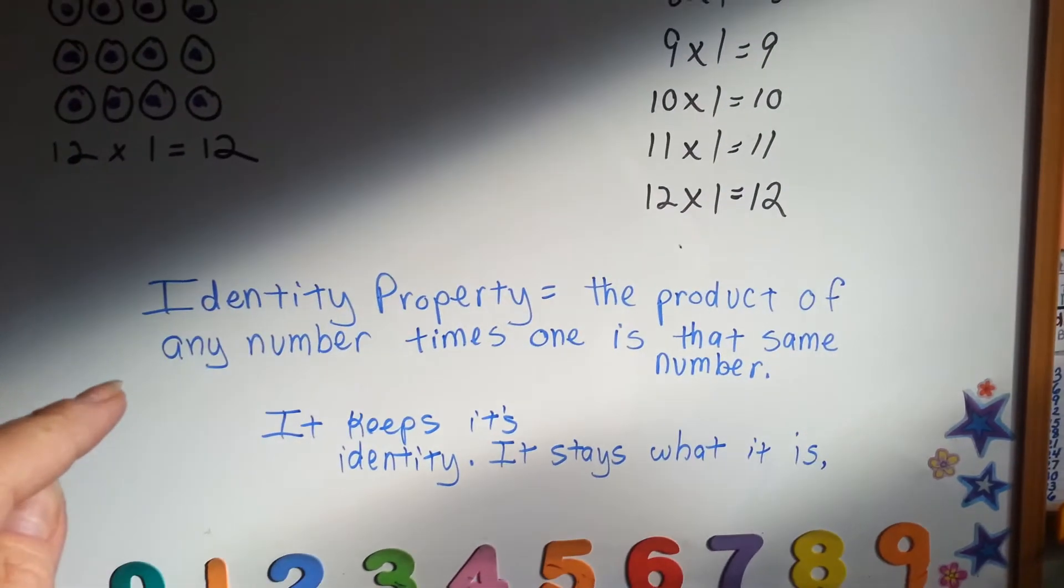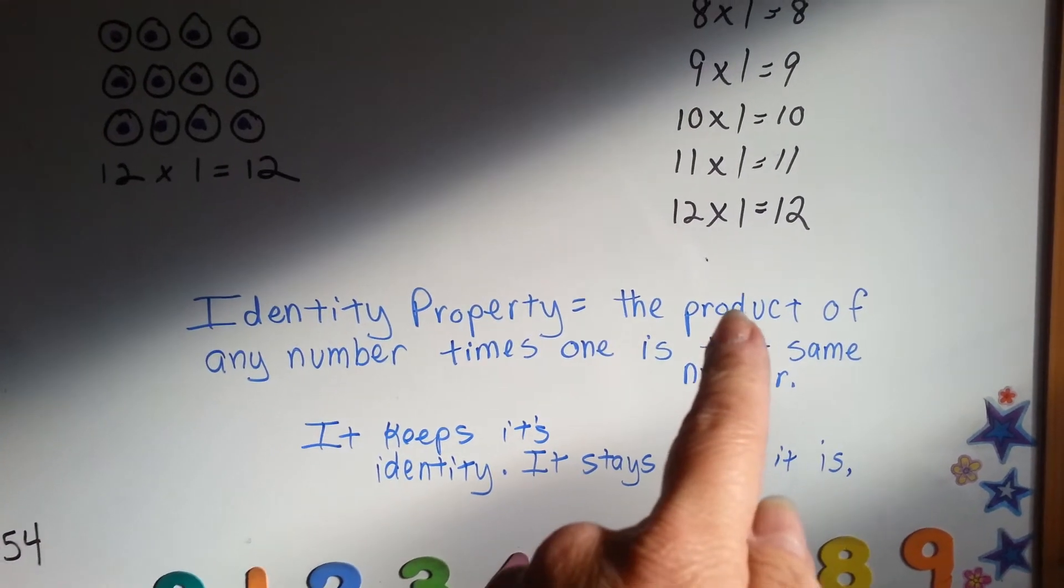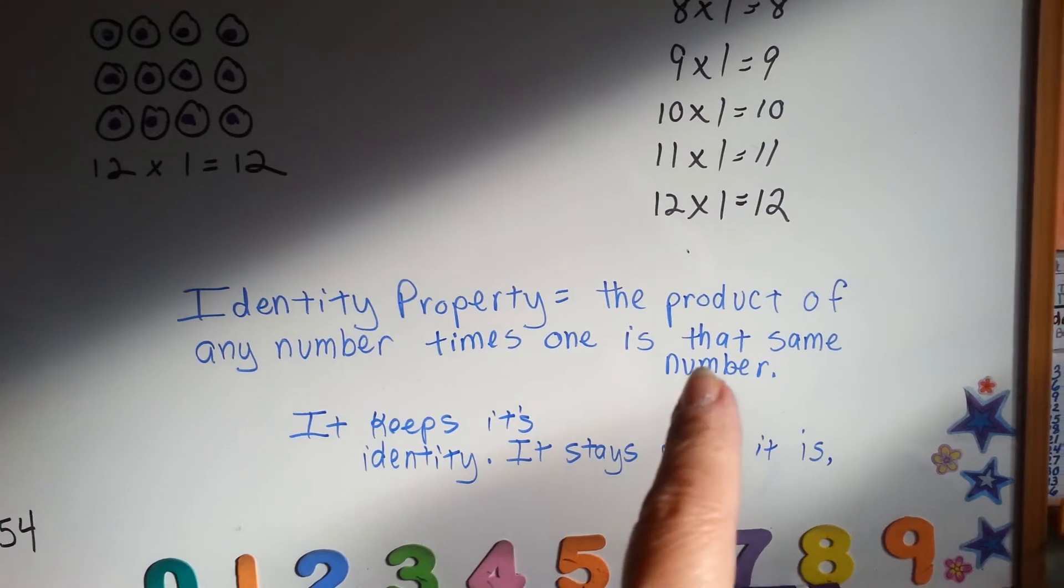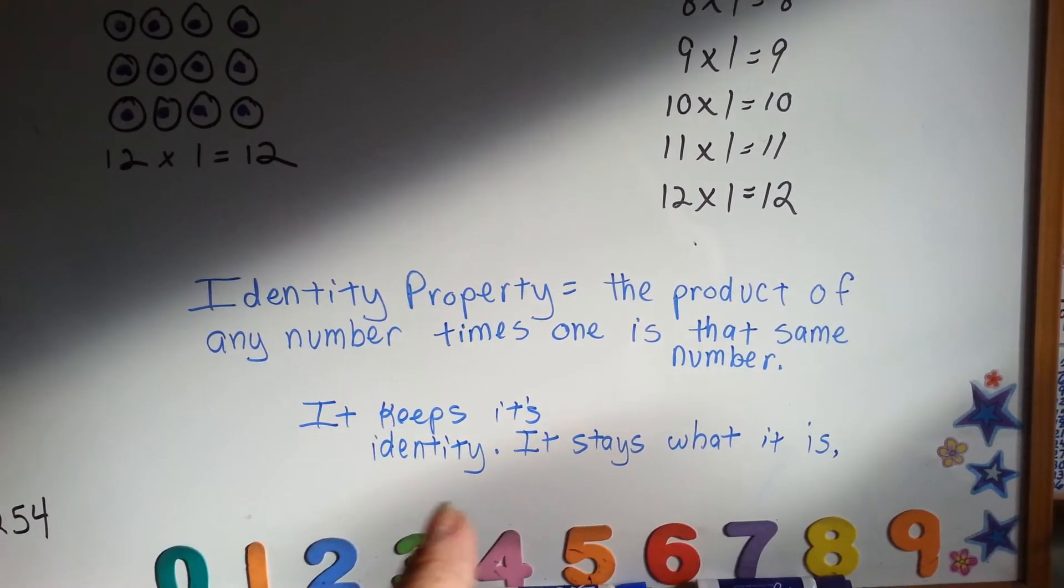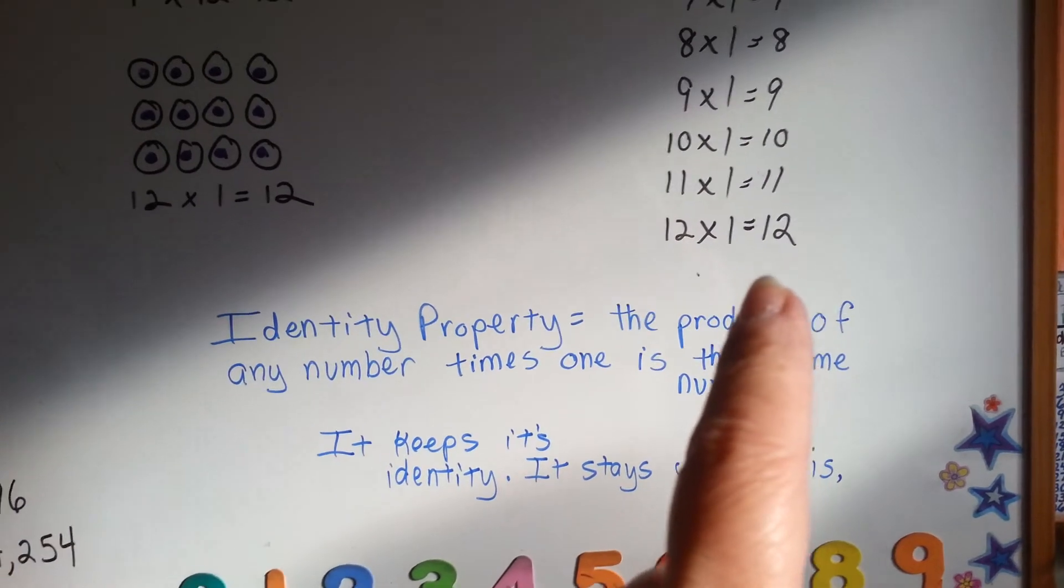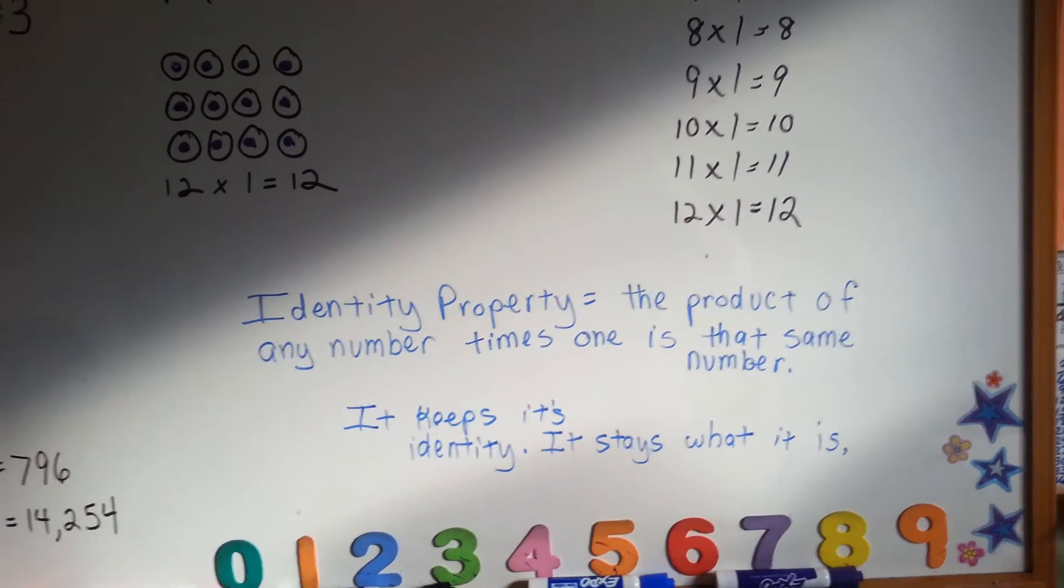Remember the identity property. The product, which is the answer in times table, the product of any number times one is that same number. It keeps its identity. It stays what it is. Twelve will stay as twelve. Five hundred will stay as five hundred.